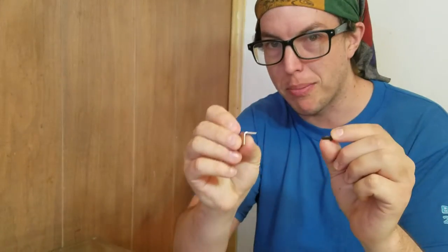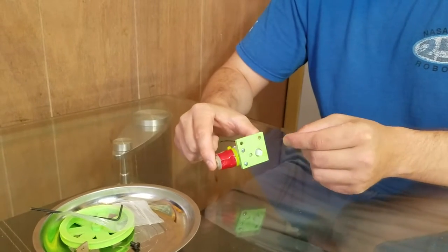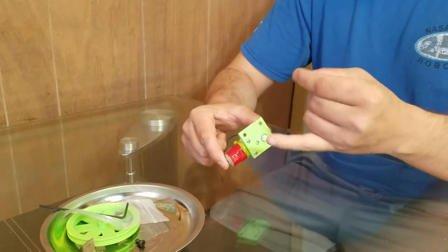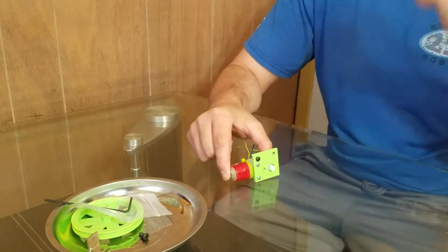We'll use the 6-32 bolt, 6-32 by 3/8 inch, and the angle bracket. We'll put the 6-32 bolt through the motor mount from the side without the motor towards the side with the motor, and we'll put the angle bracket on the side that has the motor.